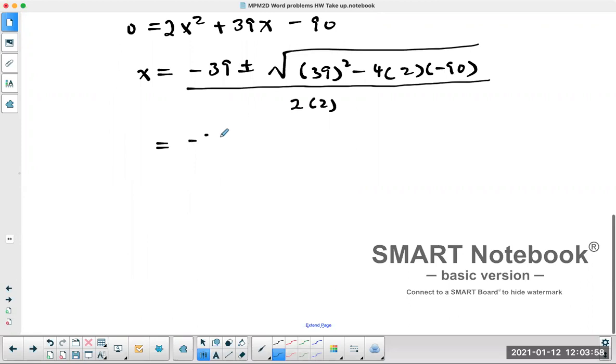Minus 39 plus or minus, need a calculator to do what's inside the bracket here. Get 39 squared minus 4 times 2 times minus 90. So I get 2,241, and it's not a perfect square.